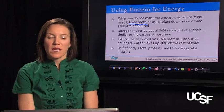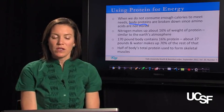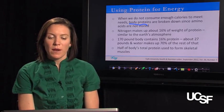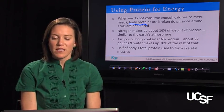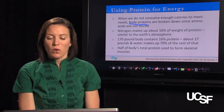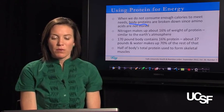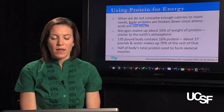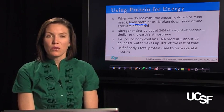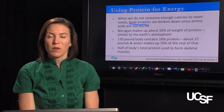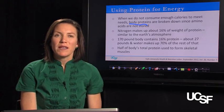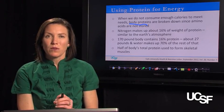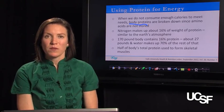Nitrogen makes up about 16% of the weight of protein. So if you have an individual who weighs 170 pounds, that body is made up of about 16% protein — about 27 pounds — plus water, which makes up 70% of the rest of that body weight. Half of your body's total protein is used to form your skeletal muscles, so it's important that you eat the right mix of dietary protein to build body proteins optimally.